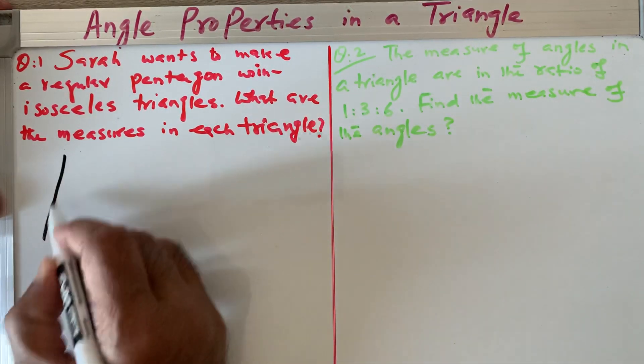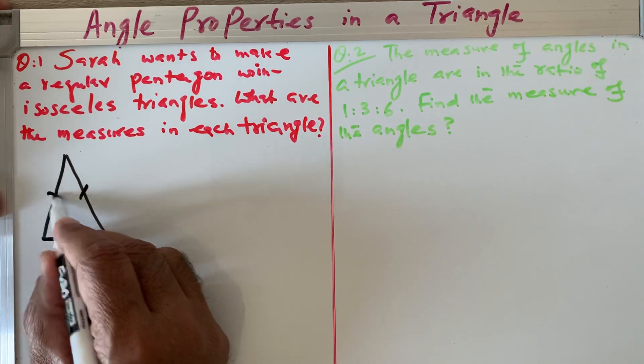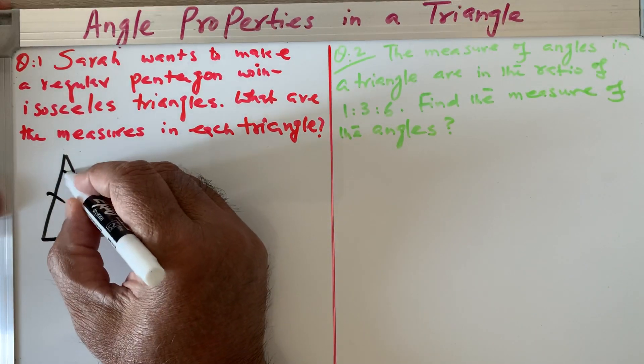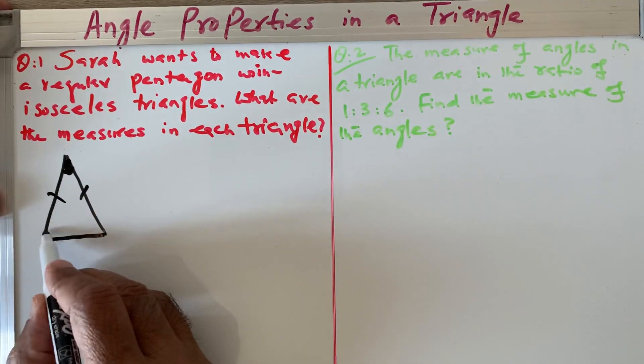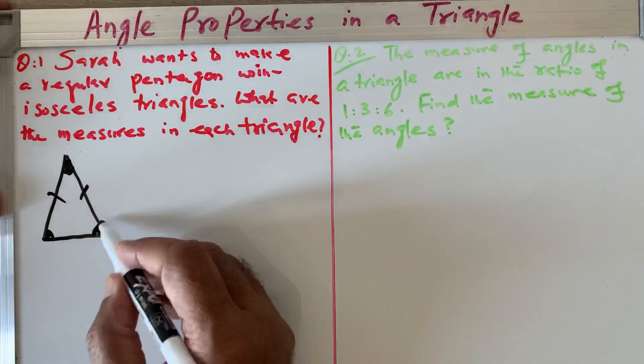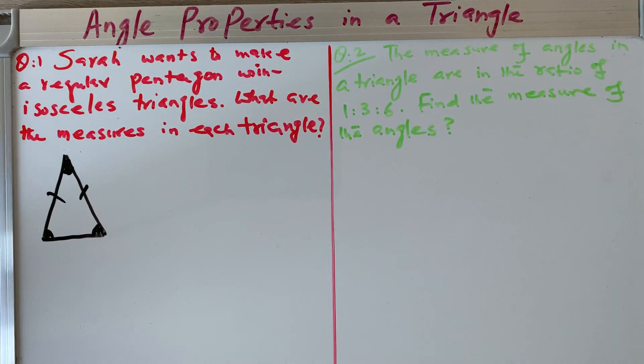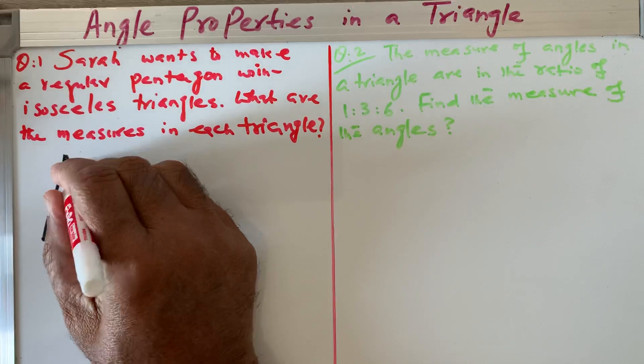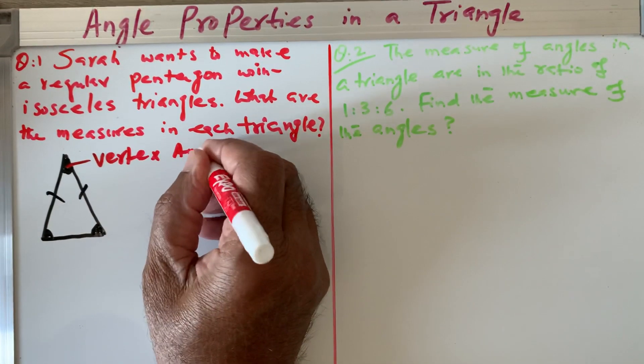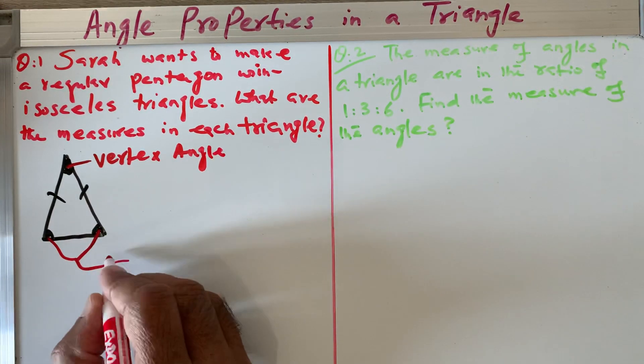We know that an isosceles triangle is the triangle which has got exactly two equal sides. So these two sides are equal. This angle is called the vertex angle and these two angles are called the base angles.